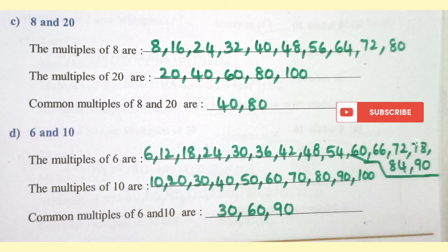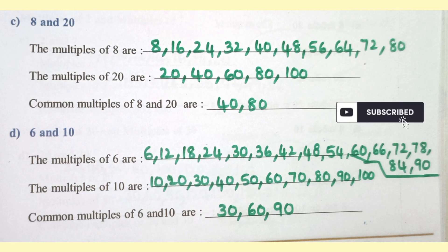Multiples of 6 and 10. Multiples of 6 are 6, 12, 18, 24, 30, 36, 42, 48, 54, 60, 66, 72, 78, 84, 90. Multiples of 10 are 10, 20, 30, 40, 50, 60, 70, 80, 90, 100. Common multiples of 6 and 10 are 30, 60, 90.